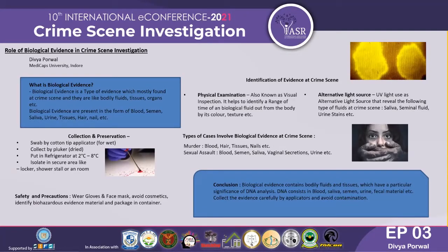Types of cases involving biological evidence at a crime scene include murder and sexual assault. In murder cases, evidence such as blood, saliva, and tissues are found. Blood is the most common in murder cases where death was caused by a tool or injury. However, if blood is not present — such as in cases of hanging or drowning — saliva is considered as a biological evidence, since both blood and saliva are biological and contain DNA.